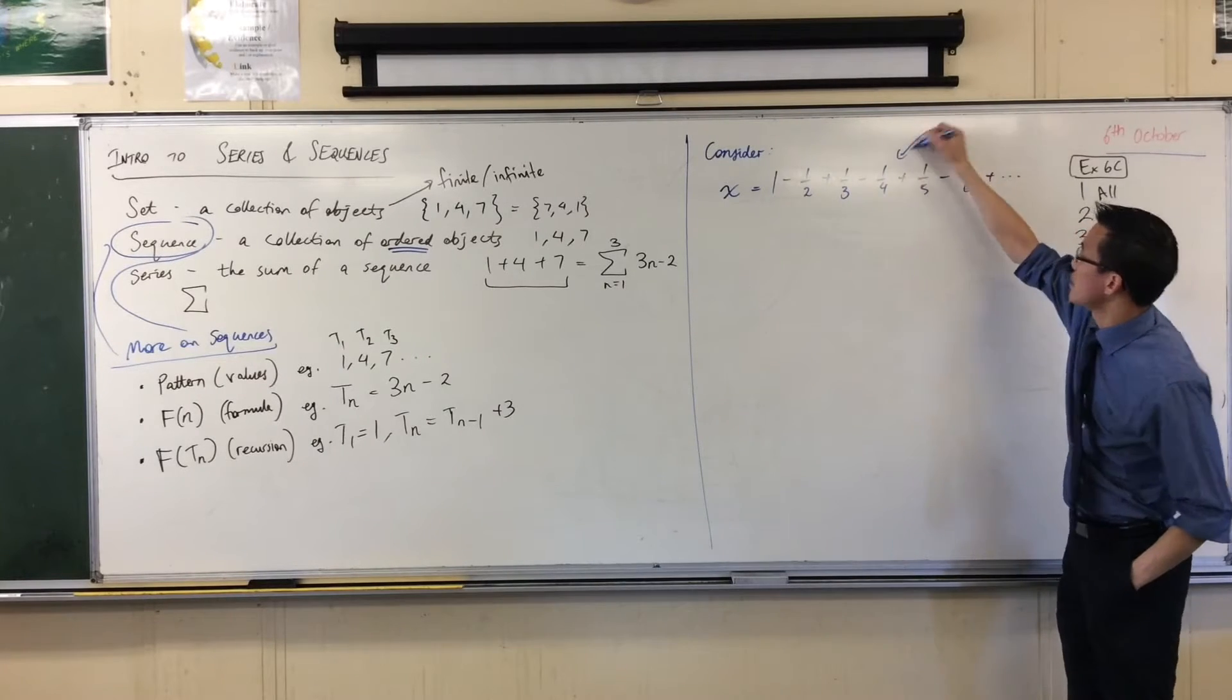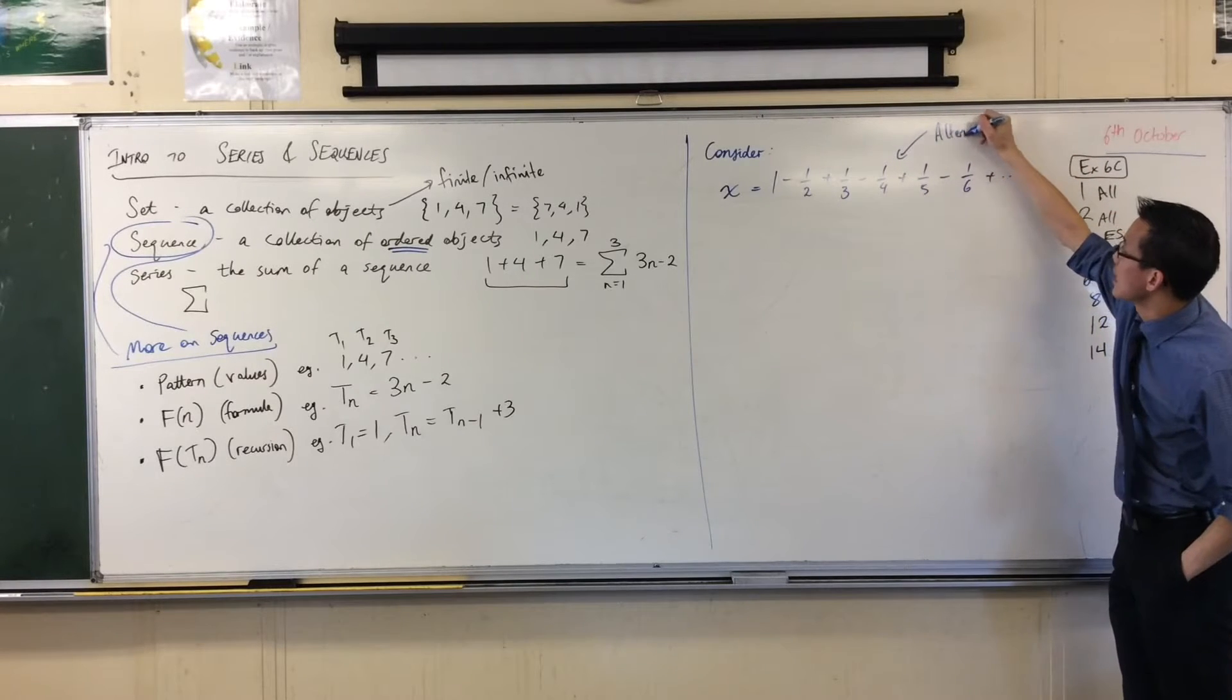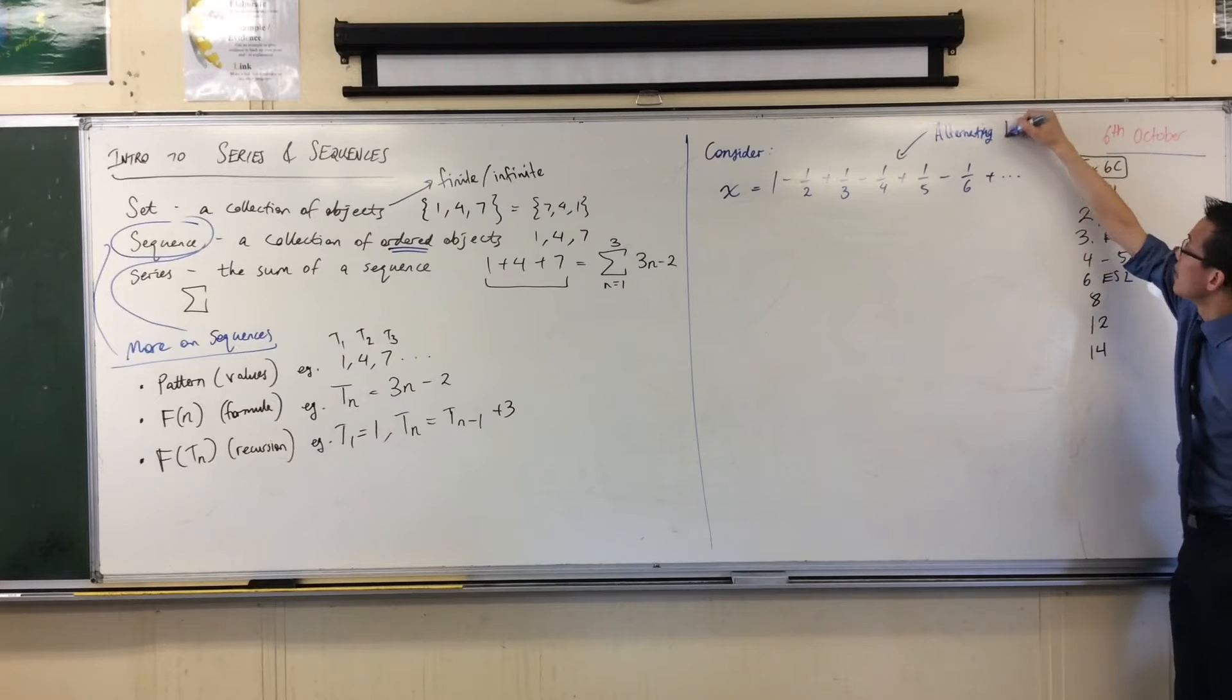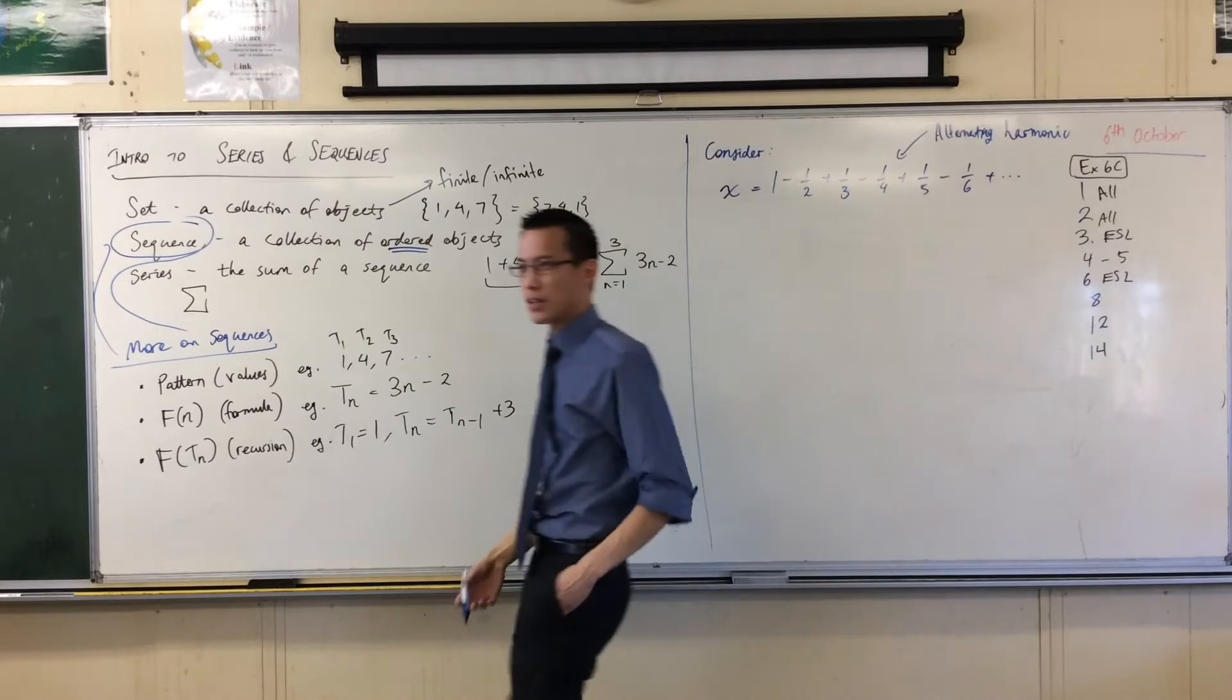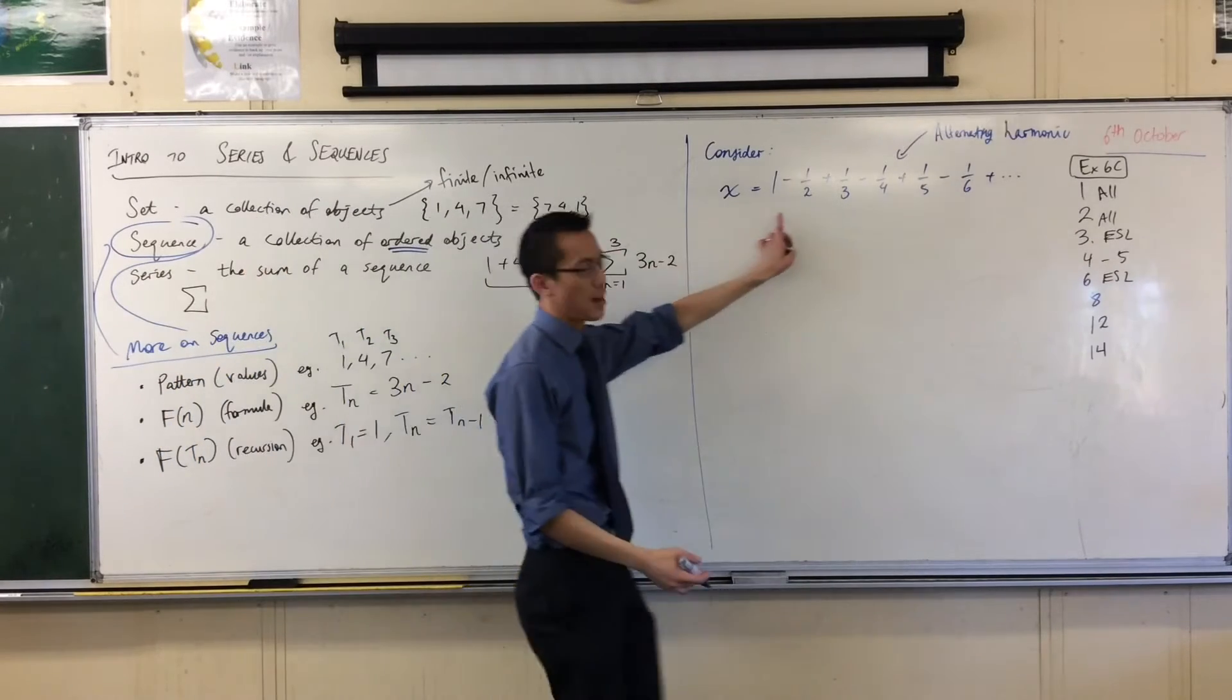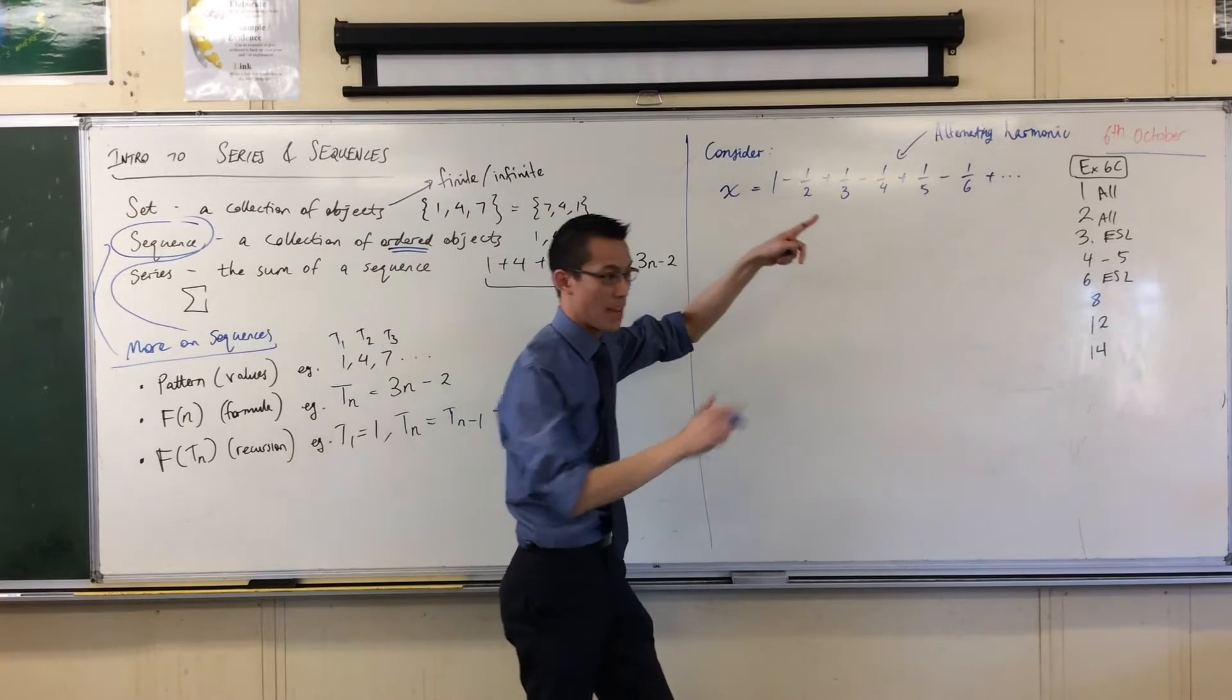By the way, this series is important. It's important enough to have a name. It's called the alternating—can you see why it's called alternating? Plus, minus, plus, minus, plus, minus—the alternating harmonic series. Harmonic as in like musical notes, because how we get the Western scale is by dividing up a string held in tension into certain ratios. So that's the name of this thing.